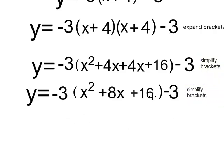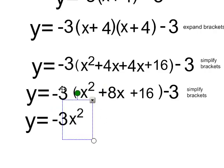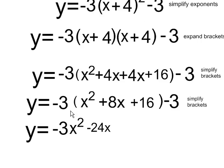Because now I have negative 3 times everything in that bracket. So negative 3 times x squared is negative 3x squared, and negative 3 times positive 8x is negative 24x, and negative 3 times 16 is negative 48. And of course, this whole mess is having 3 subtracted from it still.